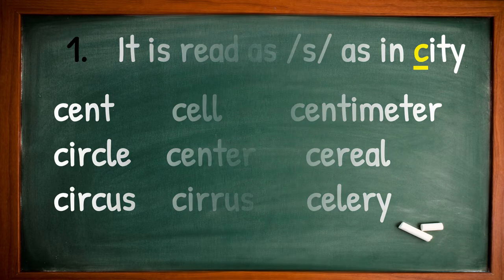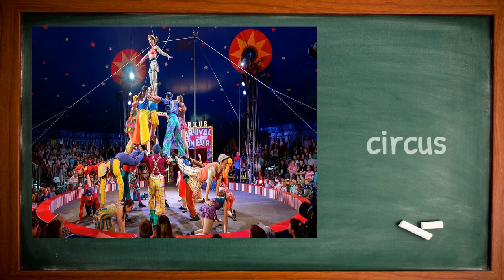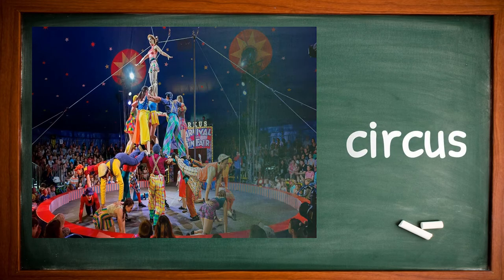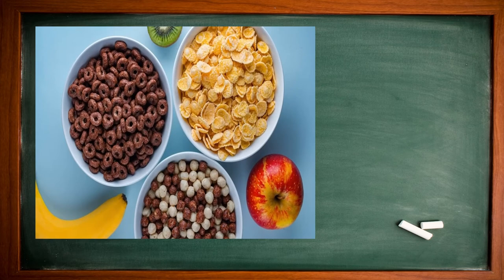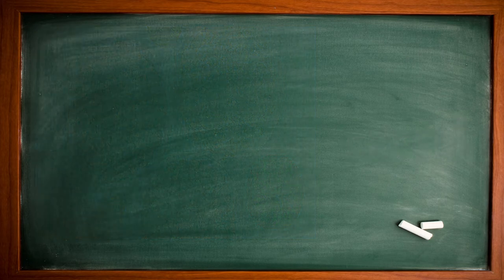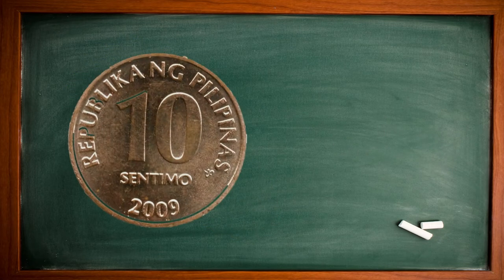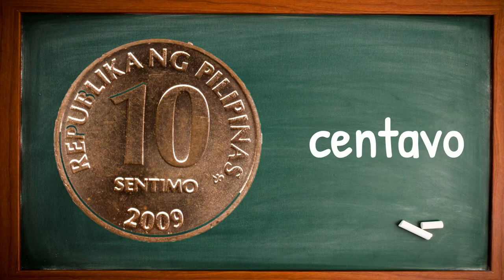What are the examples of the soft sound of C? Yes, it's a circle. This is a cereal. Yes, it's celery. Yes, it's centavo. Very good.